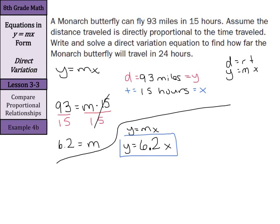Now once I have this equation, I could solve for the time. I could solve for the distance using that rate of change, using that direct variation of 6.2. So if y equals 6.2x, and my x is going to be my time here, 24 hours, y is going to equal 6.2 times 24, and 6.2 times 24 is 148.8 miles.